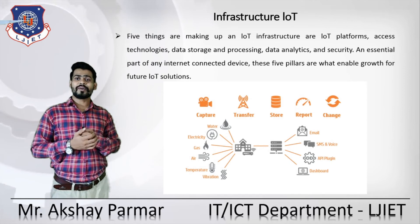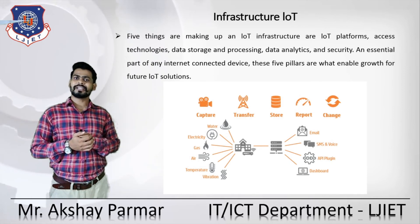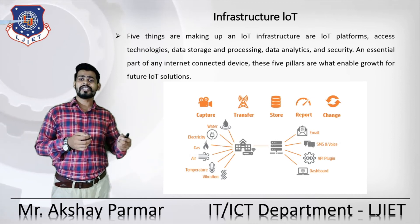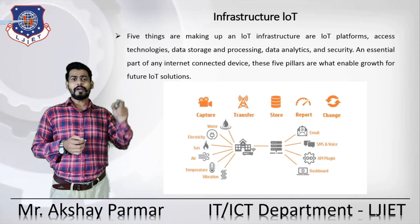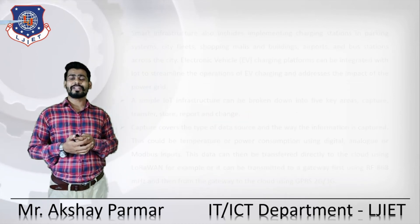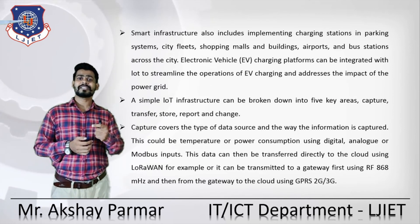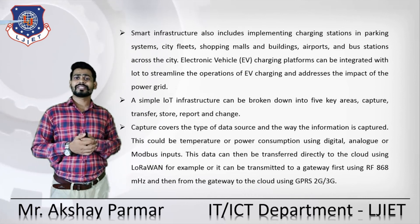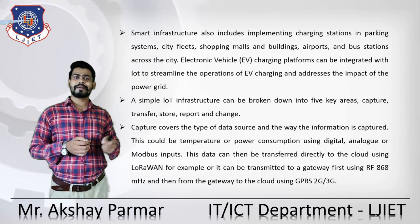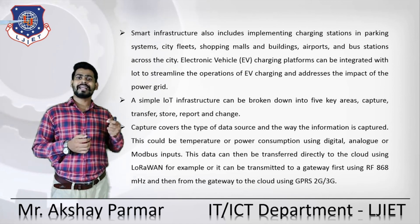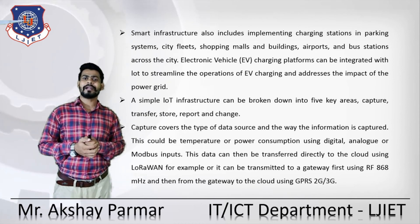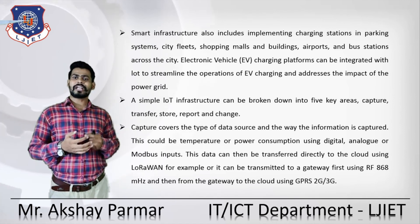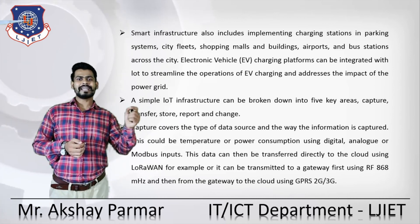The five things making up IoT infrastructure are: IoT platforms, access technology, data storage and processing, data analysis, and security — essential pillars that enable the growth and future of IoT solutions. Smart infrastructure also includes implementation of charging stations, parking systems, city fleets, shopping malls, buildings, airports, and bus stations. Electric vehicle charging platforms can be integrated with IoT to streamline operations and address the impact on the power grid.